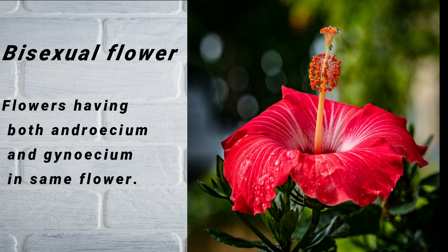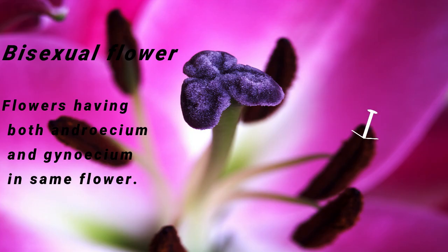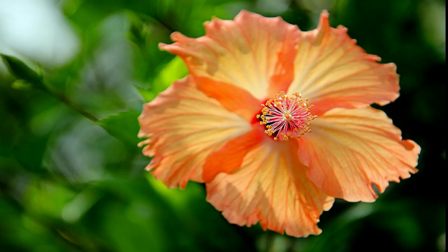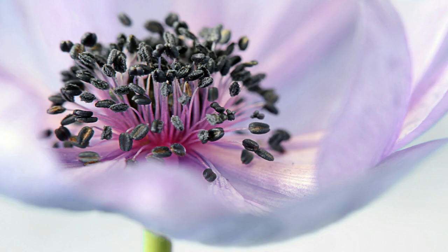That means it is a bisexual flower. There are other types of flowers — looking at this picture, you can see the anther and you can see the stigma, which are both parts of the male and female. These are examples of bisexual flowers. But there must also be a unisexual flower — look at this next picture.